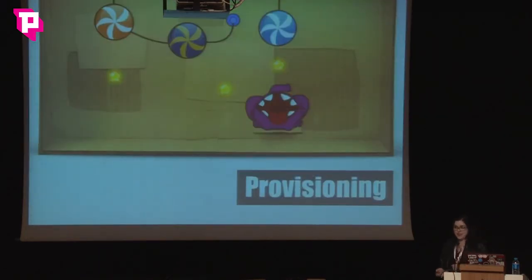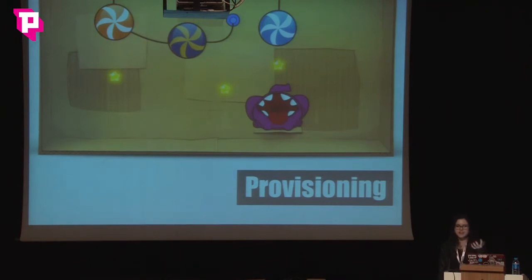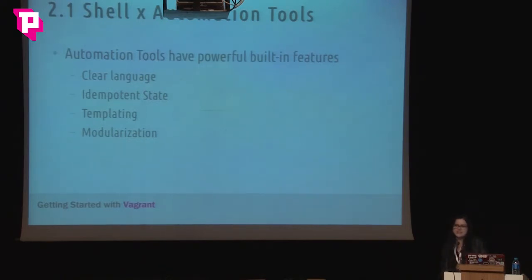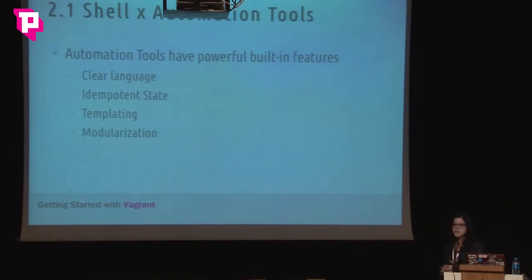Now for the provisioning part — this is the heart of the Vagrant project because it's where all the settings are and all the environment is set up. We have the shell provisioner as well, which is the easiest one, but it can't be compared to the other tools because it's very simple. Tools like Puppet, Chef, and Ansible are like frameworks — they have a lot of built-in features that you would have to implement manually with shell script.